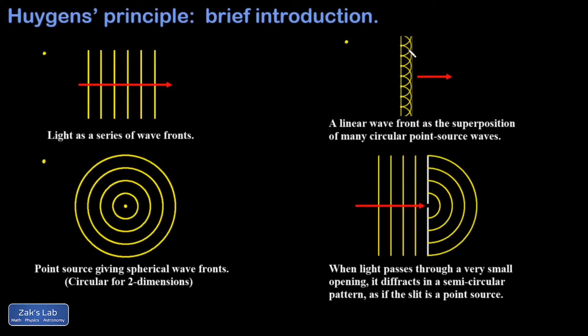And the interference of those wave fronts produces the linear wave front moving to the right a short time later. So we see this in the third picture. We have our initial wave front on the left, and we view that as thousands and thousands of point sources that are all just lined up on that wave front.